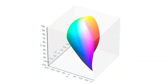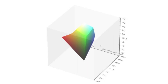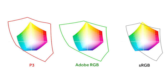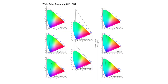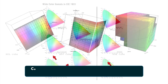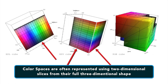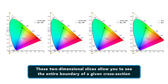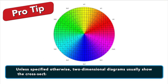Everything inside the color space is therefore a more subtle combination of the colors shown on the surface. This diagram is intended to help you qualitatively understand and visualize a color space. However, it would not be very useful for real-world color management, because a color space almost always needs to be compared to another color space. In order to visualize more than one color space at a time, color spaces are often represented using two-dimensional slices from their full three-dimensional shapes. These are more useful for everyday purposes because they allow you to quickly see the entire boundary of a given cross section.